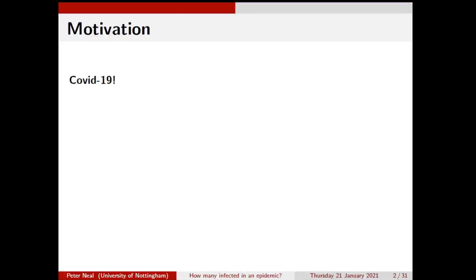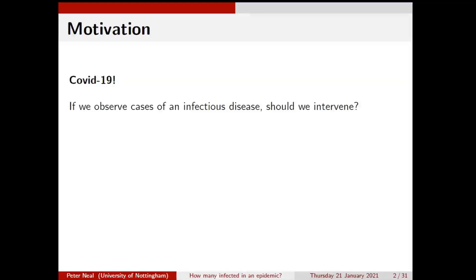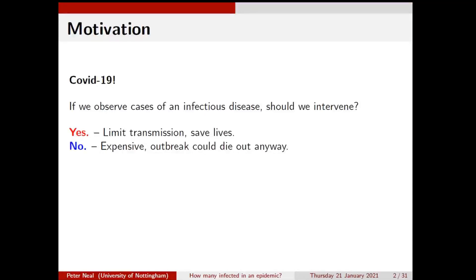Unfortunately, things have perhaps moved on since then, and I currently have three school-aged children at home. More generally, if we observe cases of an infectious disease, the question is: should we intervene? Obviously there's a yes and a no. Yes, we want to limit transmission and save lives. On the other side, it might be very expensive to intervene. A lot of epidemic outbreaks die out very quickly, so we don't want to take all the precautions if the epidemic would have already died out anyway.